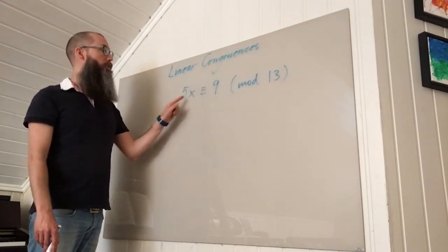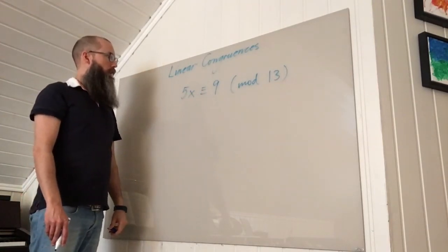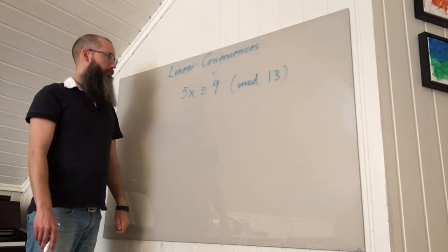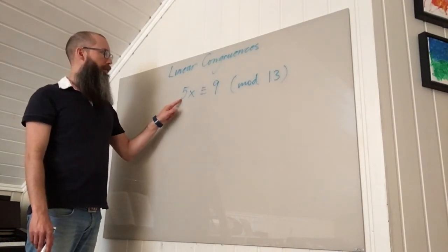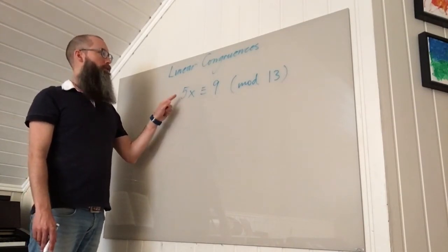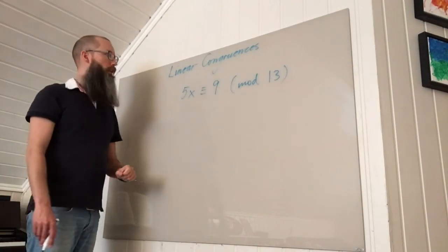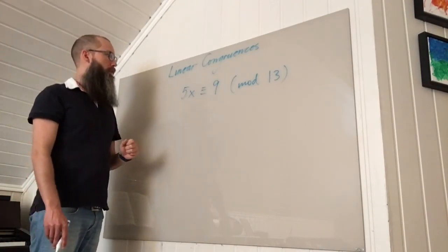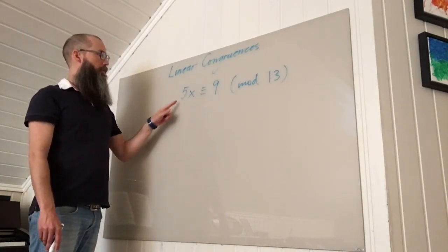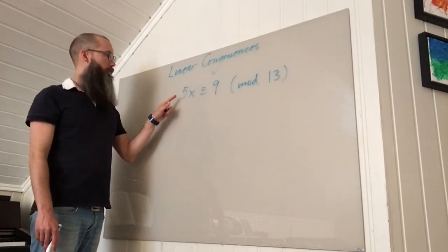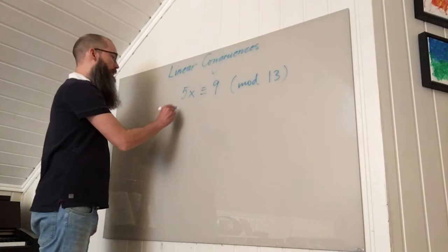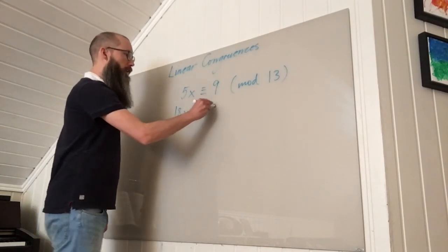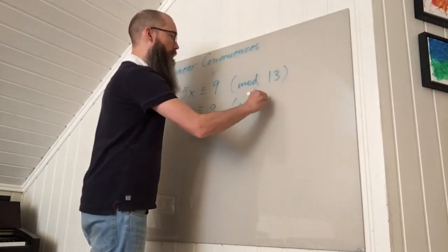So what I can do is I can replace 5 by numbers congruent to 5 mod 13, so that I might be able to divide. And I'm going to choose to replace 5 by 18. So 18x is congruent to 9 mod 13.